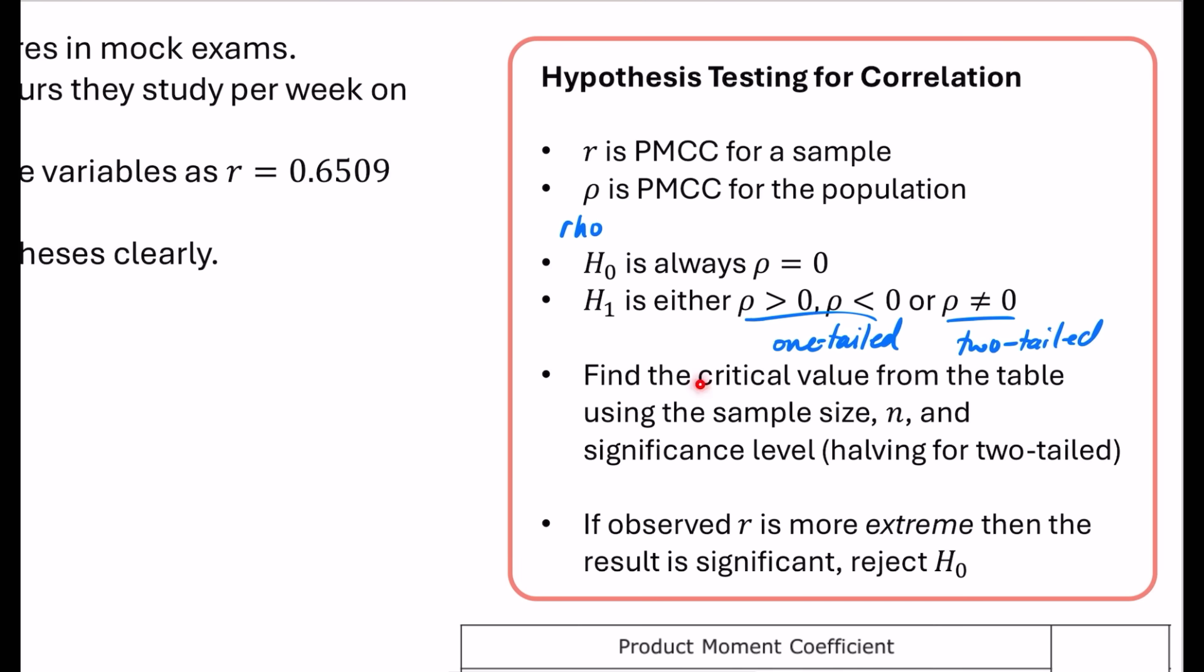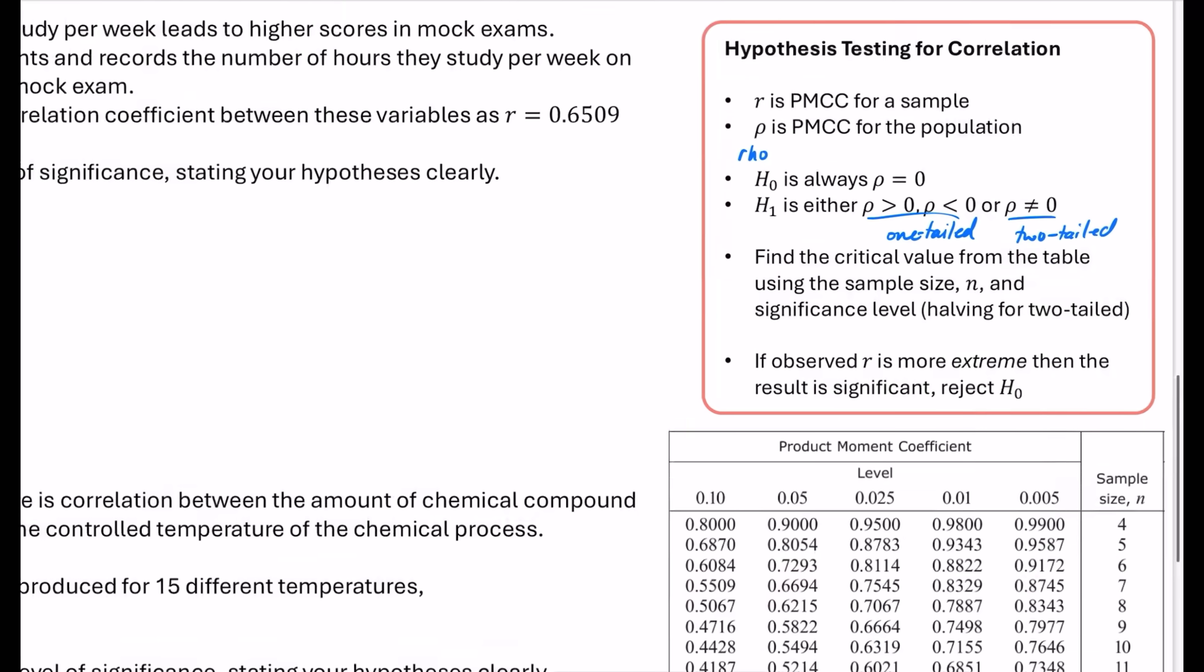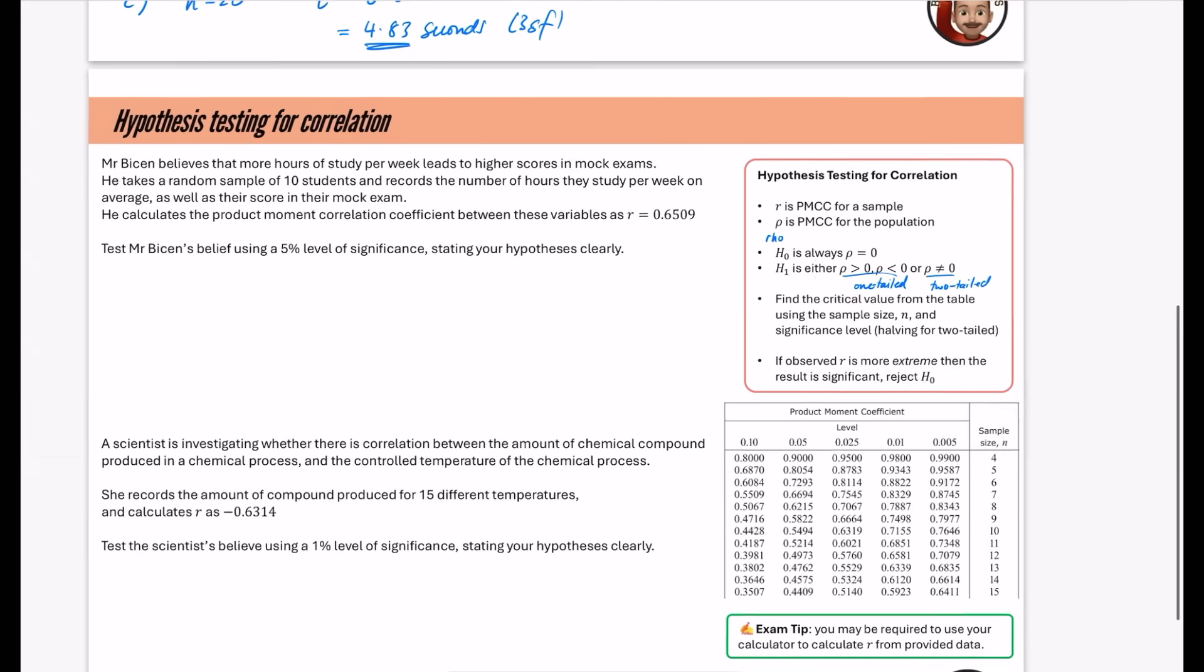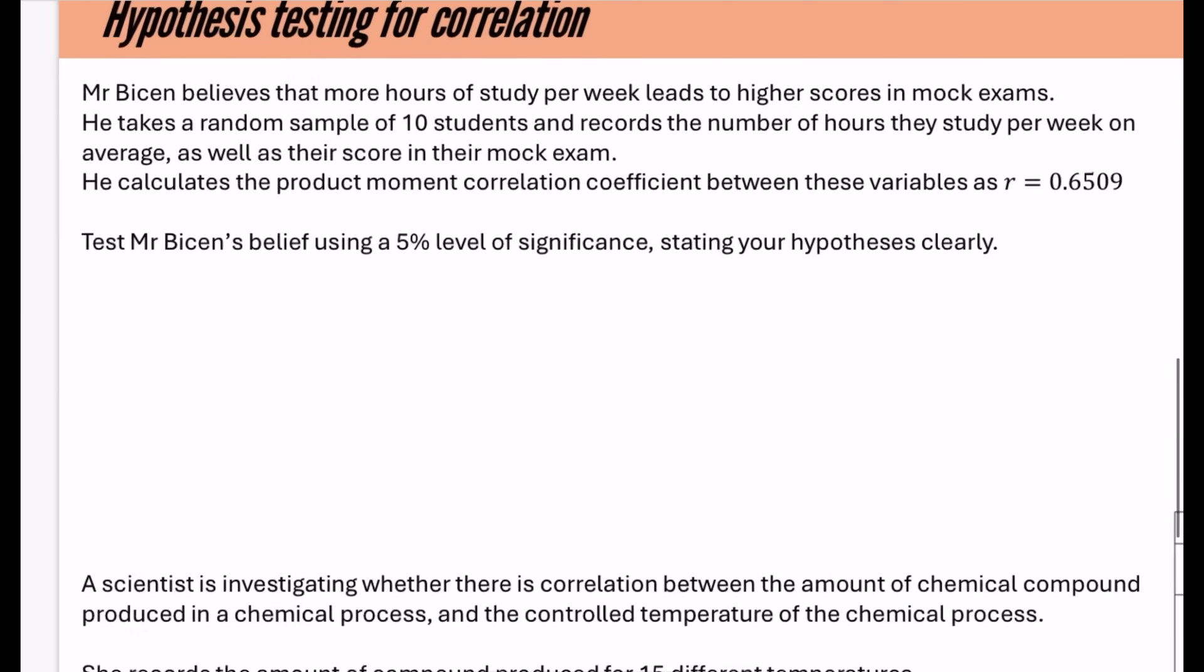So what we do for this is we find the critical value from the table that we have using the sample size N and then the significance level along the top, and make sure you half it for a two-tailed test. This is the crucial part. If the observed R value is more extreme than the critical value, then the result is significant and you reject H naught. And that will be a bit clearer when we do this with an example.